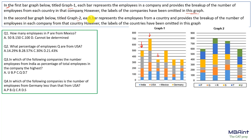What is the second graph? Graph 2 — each bar represents the number of employees from a country and provides the breakup of the number of employees in each company from that country. However, the labels of the countries have been omitted. So just the opposite thing happens in this graph: for various companies — P, Q, R, S, T, U — we know the number of employees from different countries. What is missing here is the country. If we sum this up, we will get the company.